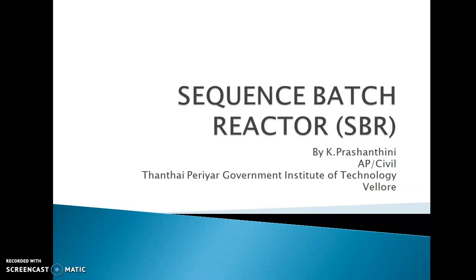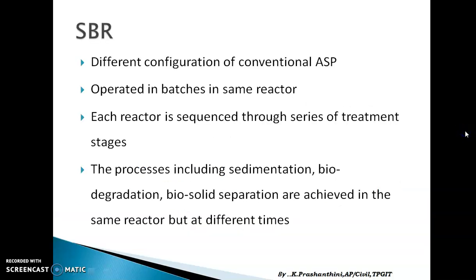Welcome. This video lecture is on the Sequence Batch Reactor (SBR). SBR is a different configuration of the conventional activated sludge process. In the conventional ASP, an aeration tank is where biomass is mixed with fresh raw sewage, then the mixed liquor goes into a secondary sedimentation tank where biosolids are separated, partially removed, and recycled. In SBR, all these operations take place in a single tank.